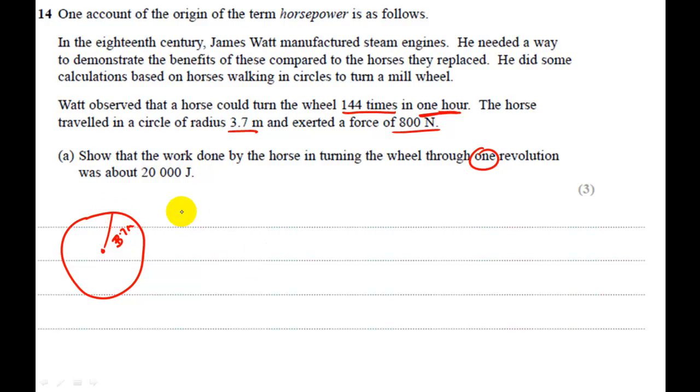So we can use the work formula to calculate the amount of work done in one revolution. Work is equal to force multiplied by the distance to which that force traveled. The distance is going to be the circumference of this circle. So we need the formula for the circumference of a circle. It's force times 2πr, which should get us the correct answer.